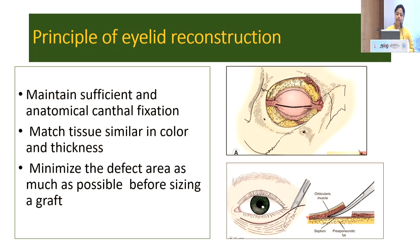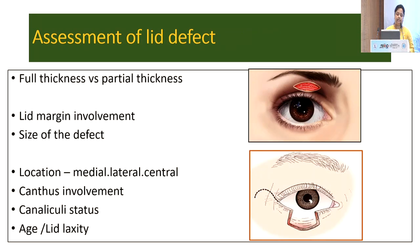We should match the tissue in similar colour and thickness, and if we are planning for skin grafting, we should minimize the defect area as much as possible before sizing a graft. In the assessment of lid defect, you should determine whether it is full thickness or partial thickness, lid margin involvement, size and location of the defect, canthal involvement, canalicular status, and of course, the age of the patient or the lid laxity.